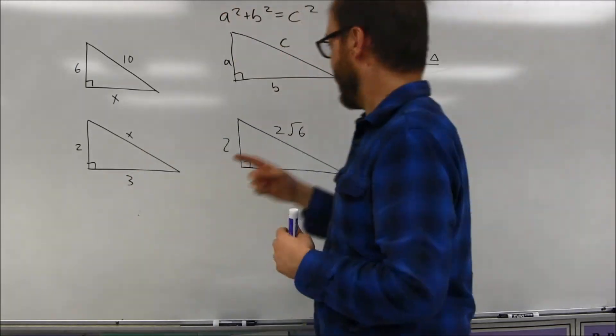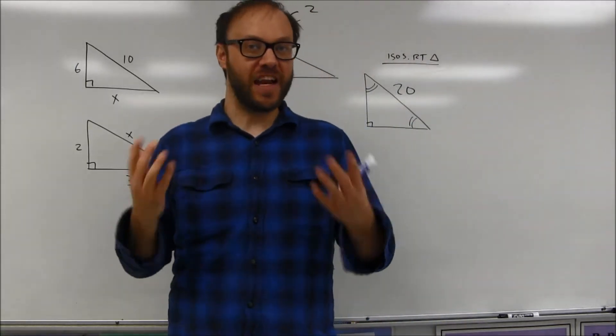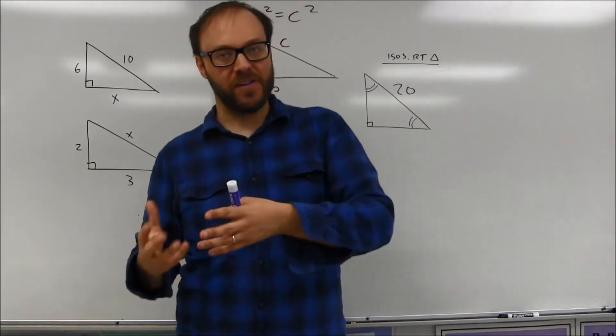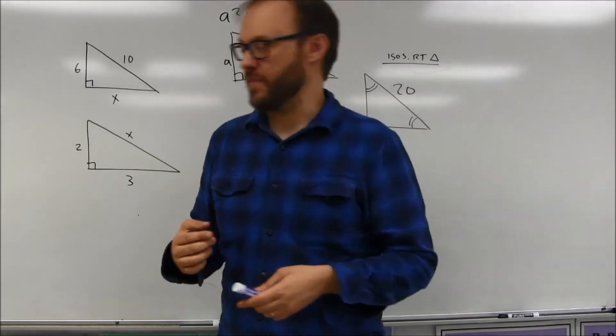That's really the key. The hypotenuse will always be opposite the right angle. Remember that the largest side of a triangle is opposite the largest angle. The smallest side is opposite the smallest angle. Obviously the middle side is opposite the middle angle.